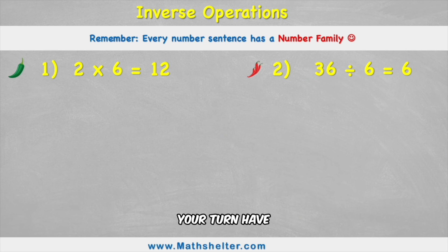So now it's your turn. Have a go at finding the remaining number family sentences for these two questions. Remember, a number family is made up of 4 number sentences. I've given you the first one. What are the other 3? Press pause on the video now. Put your answers in the comments section. Good luck.